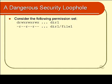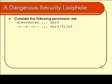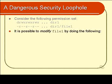Consider the following permissions. I've got a directory called dir1 and it has full permission, and inside dir1 I have a file called file1 which is read-only. Nobody can modify that file — or can they? I assert to you that it is possible to modify that file.